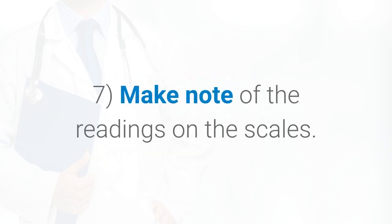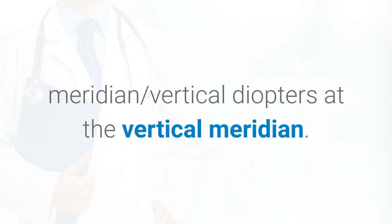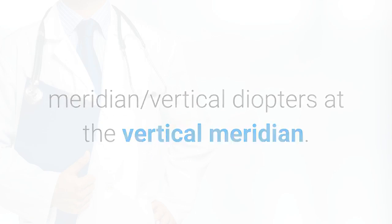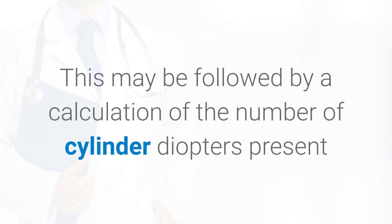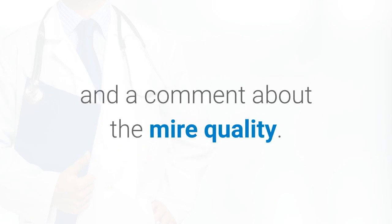7. Make note of the readings on the scales. Commonly, the readings are noted as horizontal diopters at the horizontal meridian, vertical diopters at the vertical meridian. This may be followed by a calculation of the number of cylinder diopters present and a comment about the mires quality.